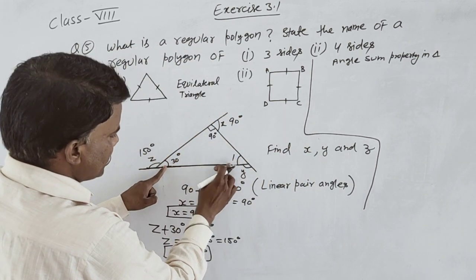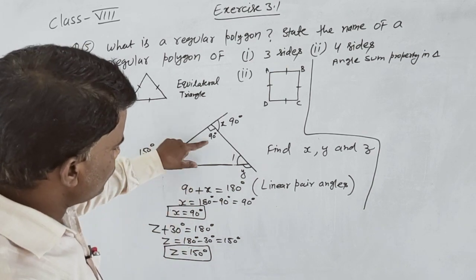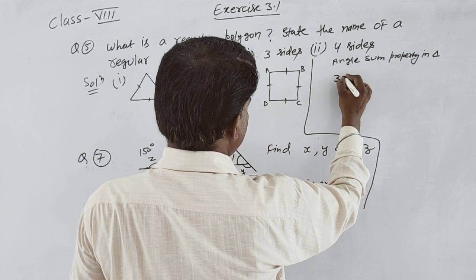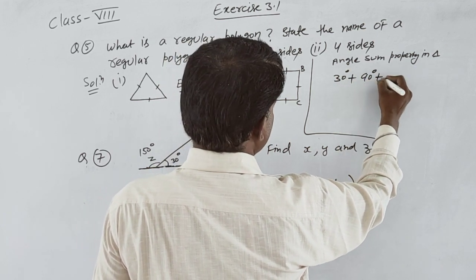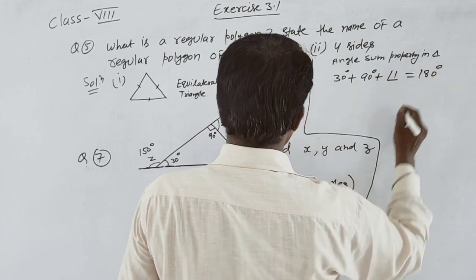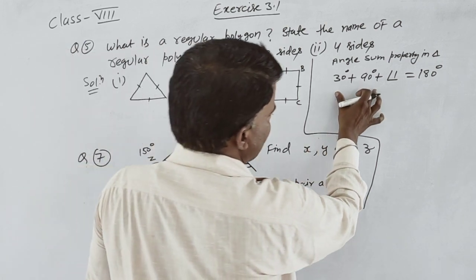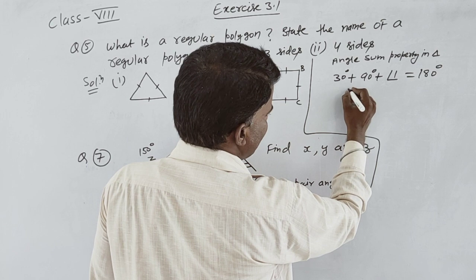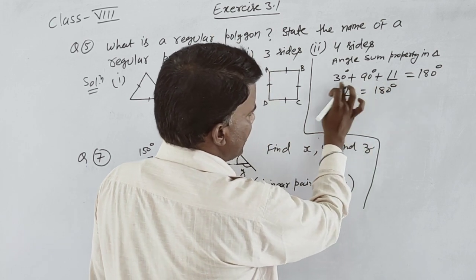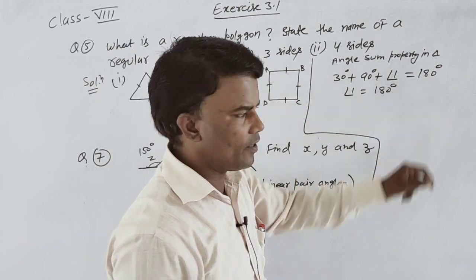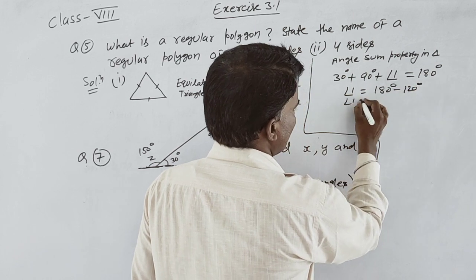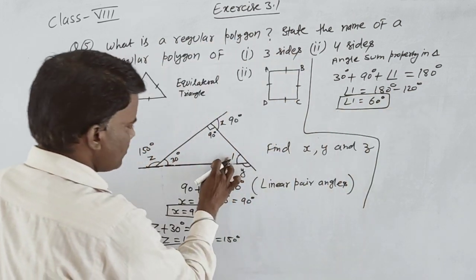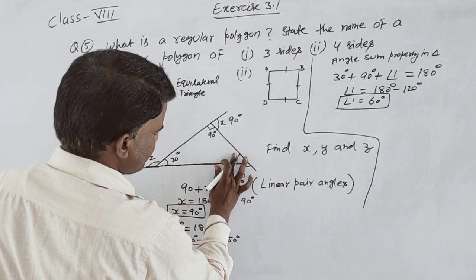30 degrees plus 90 degrees plus angle one equals 180 degrees. So 120 plus angle one equals 180. Transferring 120, angle one equals 180 minus 120, which equals 60 degrees.